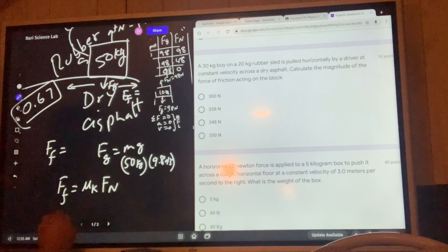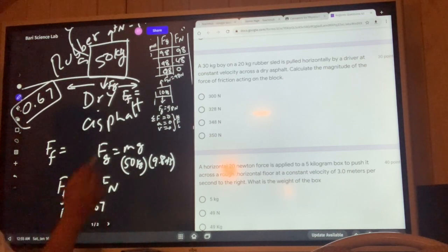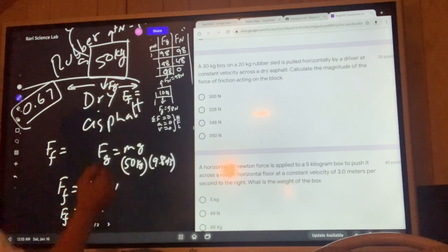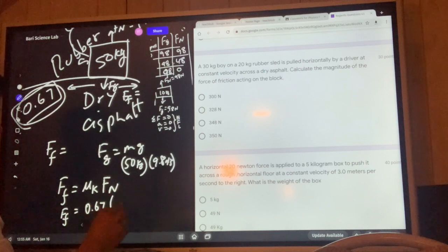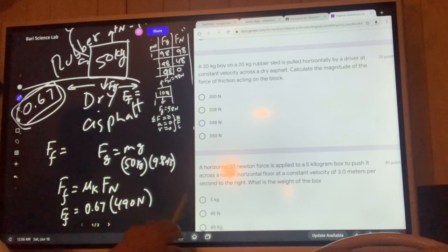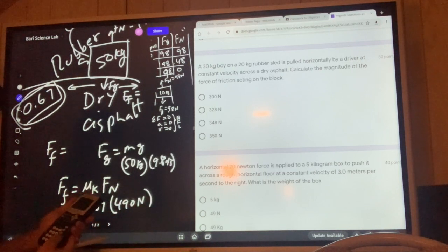So μk is of course 0.67, we found it from problem number one, right here we wrote it from the reference table. And this is 490 newtons.